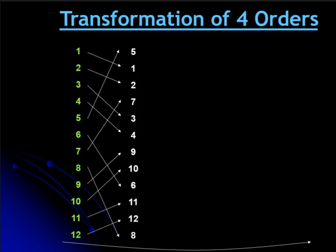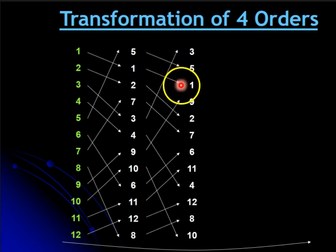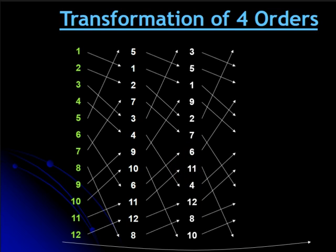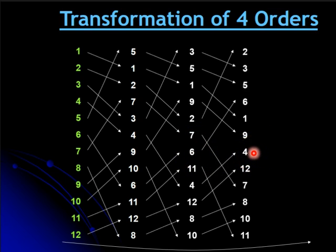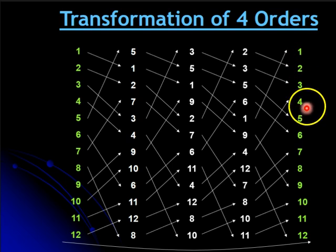Continuing these transformations: you see the number five move into the second place, one move into the third place, and all the numbers moving through the transformations — eleven follows right up to eleven. Now you have all four orders together: one, two, three, four. This last order, when you do the transformation one more time, brings you back to 1 through 12 — you come back to the original order.